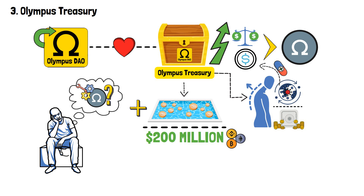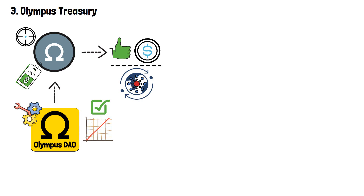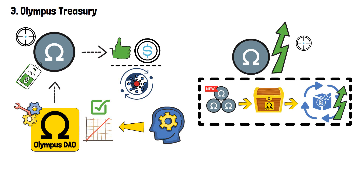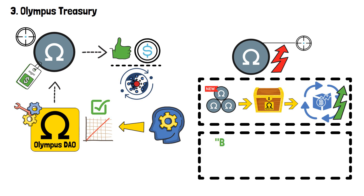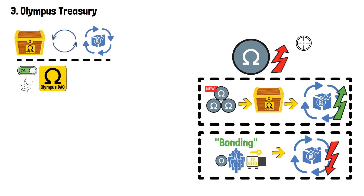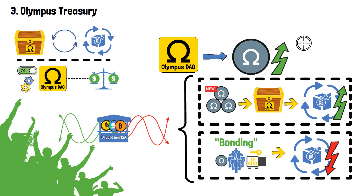But how does this OM reserve currency actually work? The OM reserve currency has a target price at which the Olympus DAO protocol strives to maintain stability. When the price of OM rises above the target, new OM tokens are minted and added to the treasury, expanding the supply. Conversely, when the price falls below target, the process of bonding occurs, where participants can bond their assets to receive OM, reducing the supply. This creates a feedback loop between the treasury and the supply of OM, enabling the protocol to automatically adjust and maintain stability.